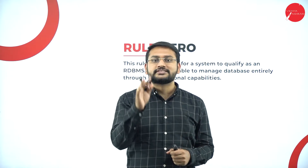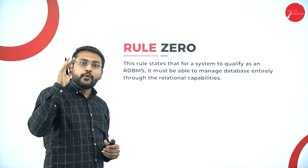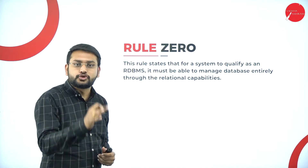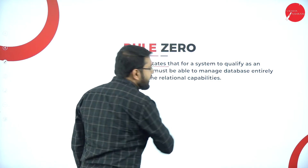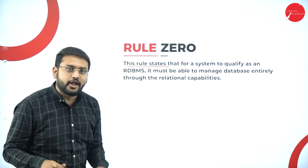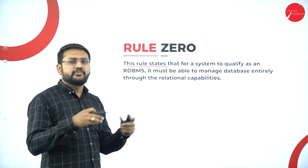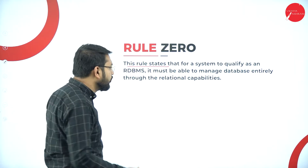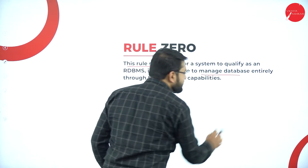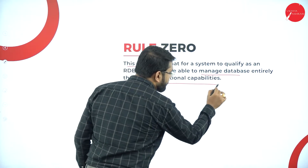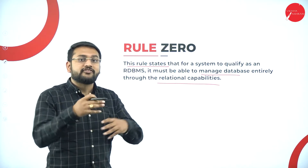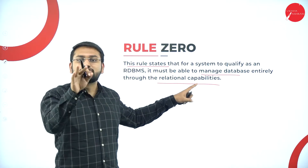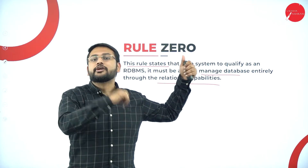Without wasting much of your time, I'm starting with Rule Number Zero. Rule Number Zero states that if the system has to qualify or satisfy everything, whatever operations it is doing, it has to follow and manage the database entirely with the help of relational capabilities. In short, whatever it is doing, it has to manage everything with respect to relational capabilities.